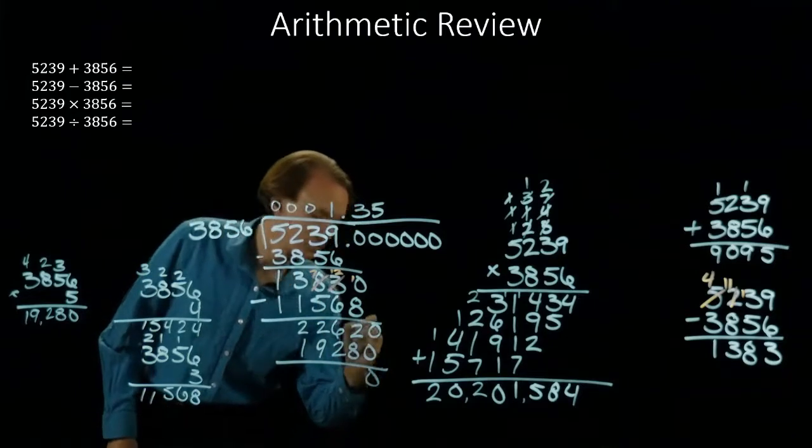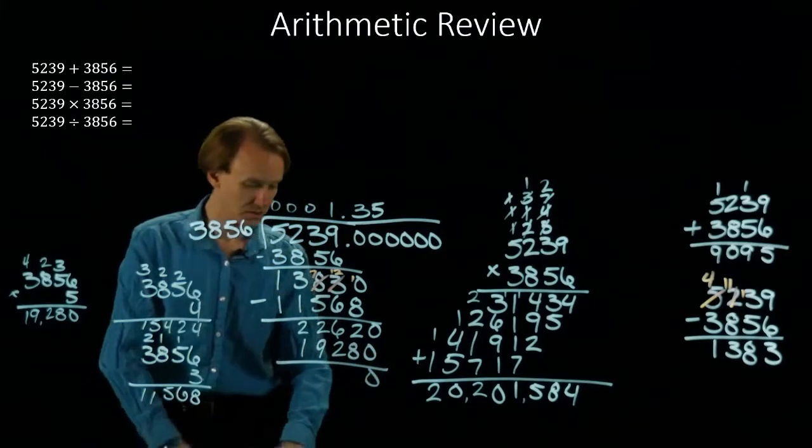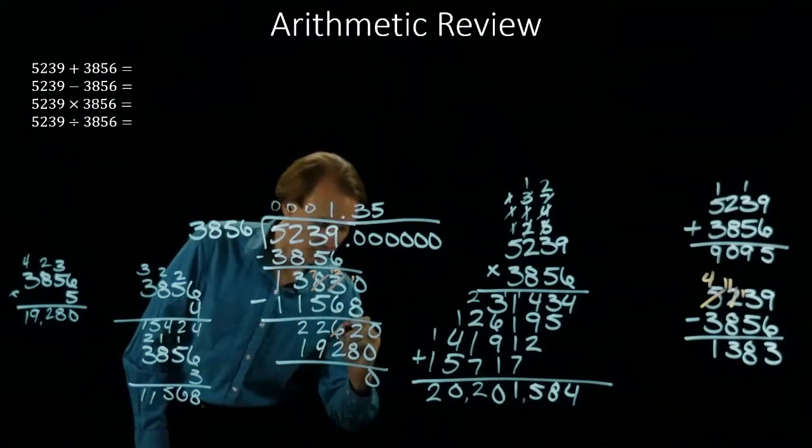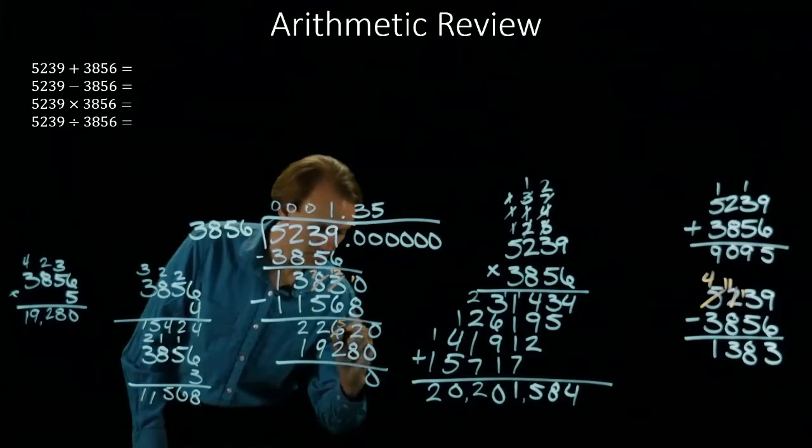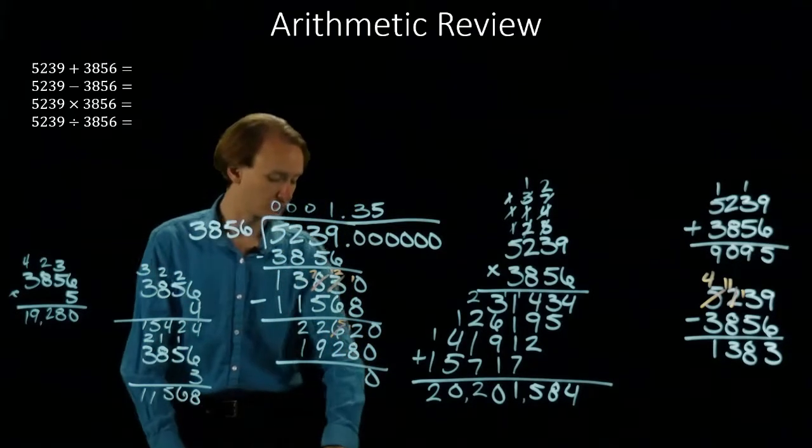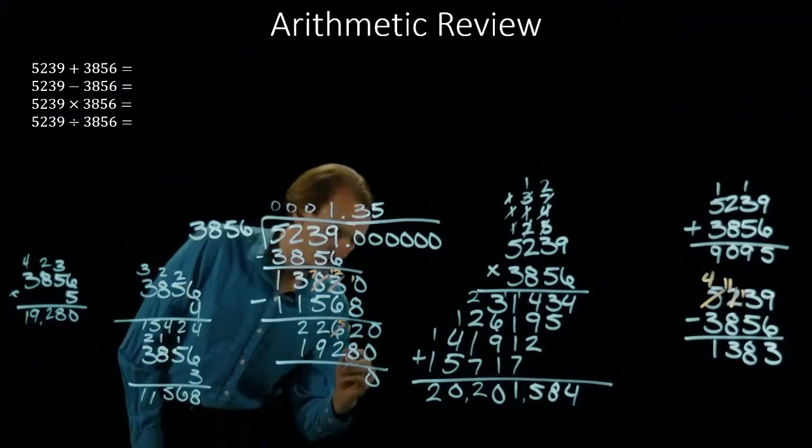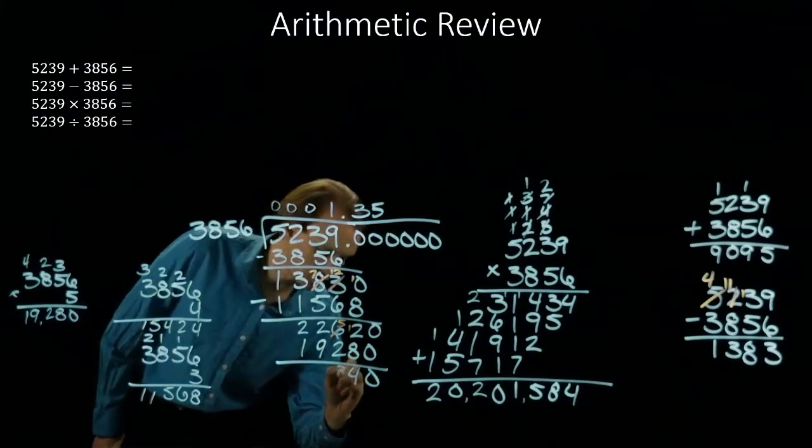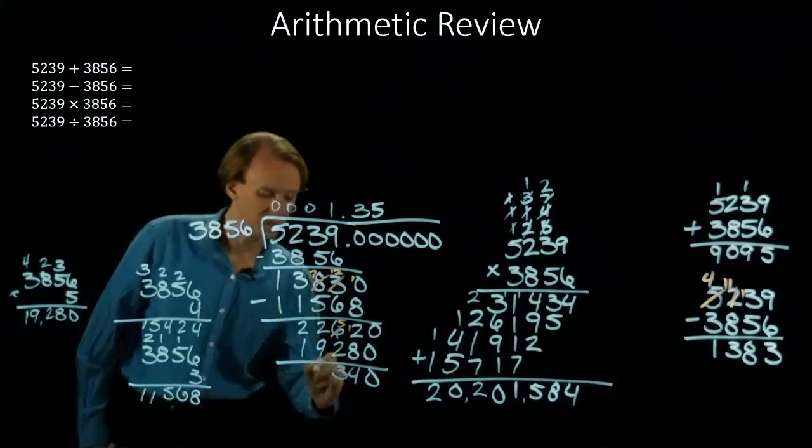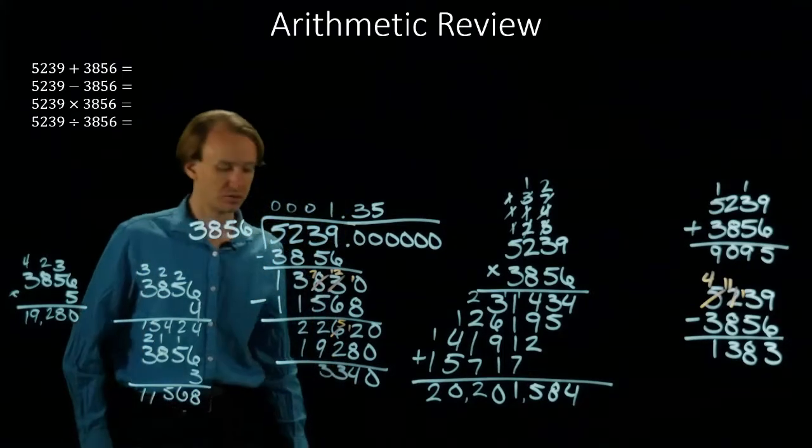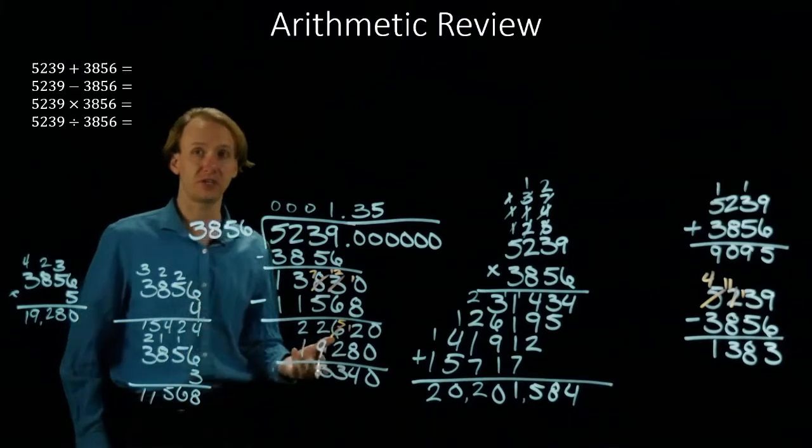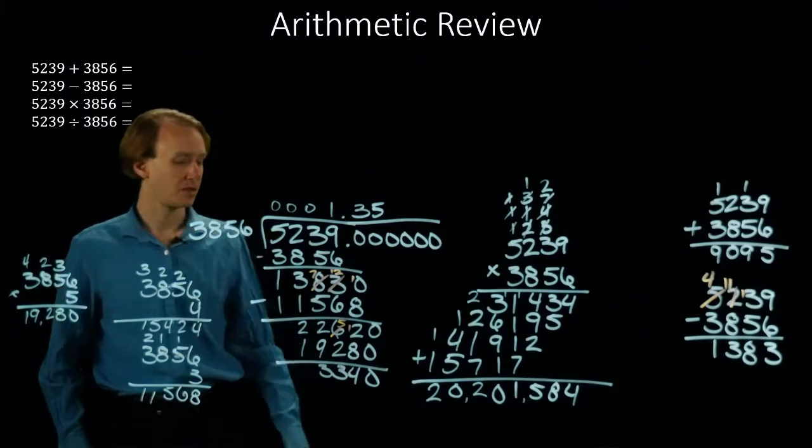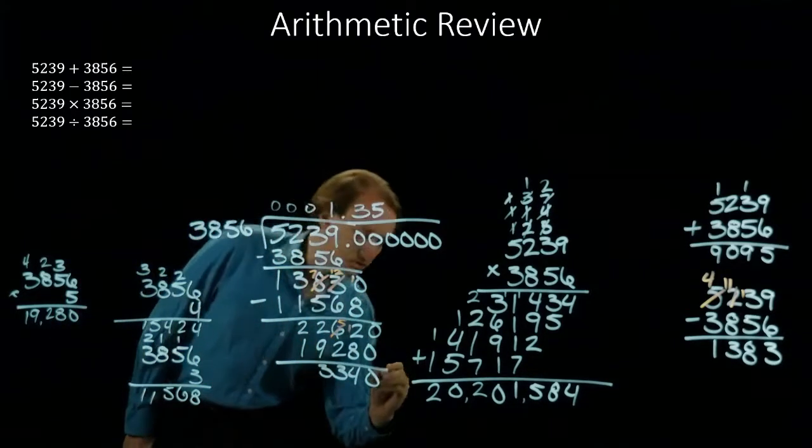And I'm going to subtract the 19,280. 0 minus 0 is 0. 2 minus 8. And I'll borrow something from my 6. It turns into a 5. Now I have a 12. 12 minus 8 gives me 4. 5 minus 2 is 3. And 22 minus 19 will also give me 3. So 3340 is less than 3856, which is good. And I can pull down another 0.